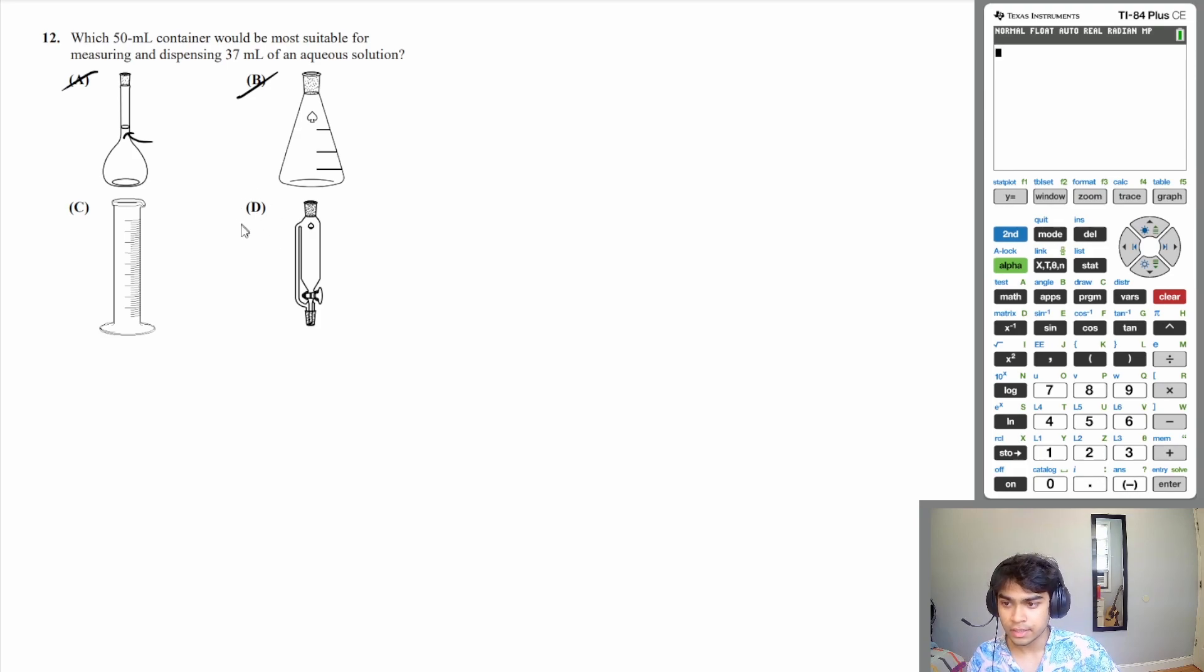D is a dropping funnel. This is used for dispensing liquid. And this little handle over here is helpful because whenever you're doing reactions where a gaseous condition is required, when you go to dispense your liquid, the gas, this little handle will make sure that the pressure is stabilized and the pressure is constant. So this is not going to be suitable for measuring and dispensing liquid. So D would be wrong. So C, a graduated cylinder would be the most suitable option.